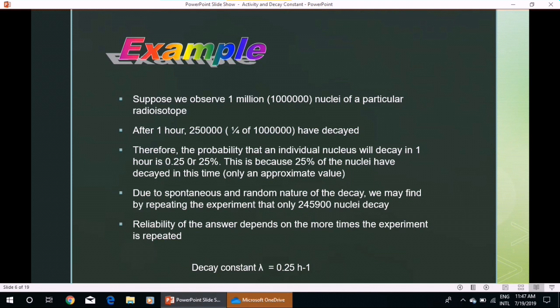Therefore, the probability that an individual nucleus will decay in 1 hour is 0.25 or 25%. This is because 25% of the nuclei have decayed in this time. This is only an approximate value.